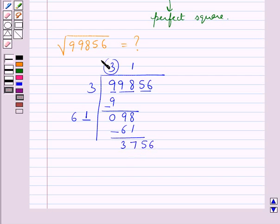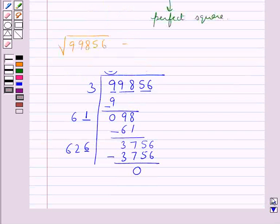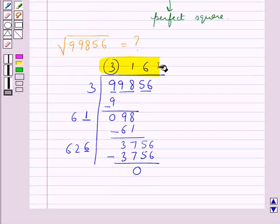Double this quotient. We get 62 with a blank. Now 626, 6 times is 3756, and we get the remainder as 0. So this quotient gives us the square root of the number 99856.